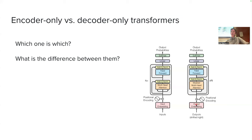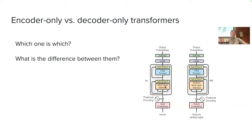Going back to the question about whether you could use future tokens when doing classification with a decoder-only model: you still don't want to do it. Your pre-trained weights have seen a lot of attention matrices with zeros above the triangle, and if you allowed non-zero values there, you'd introduce an out-of-distribution problem for your architecture. You still don't want to, even though you're doing classification.